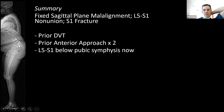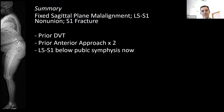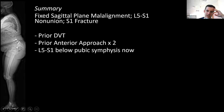L5-S1 is below the pubic symphysis, so I would not advocate for a third anterior even if it weren't. Having been raised by Larry Lenke — that all-posterior is possible — and then shown by Manish Gupta that the front of the spine is good when you can get there safely, I think doing an anterior here is not feasible or intelligent. With two prior anterior approaches, everything will be so adherent. You won't be able to move the common iliacs at all. The veins will tear and you can get into a really bad situation.